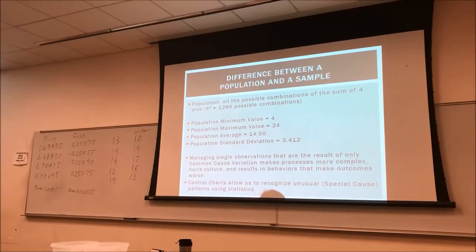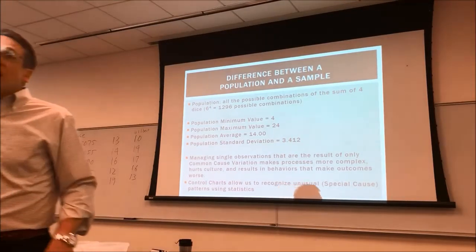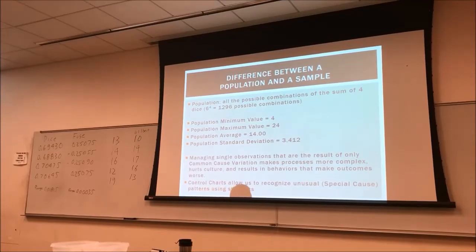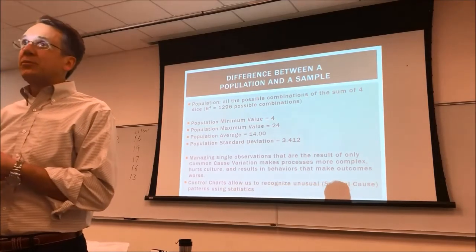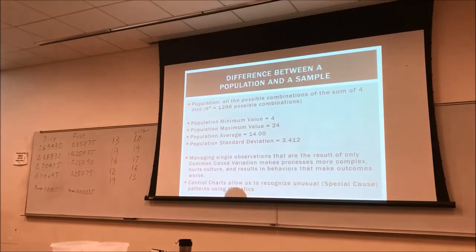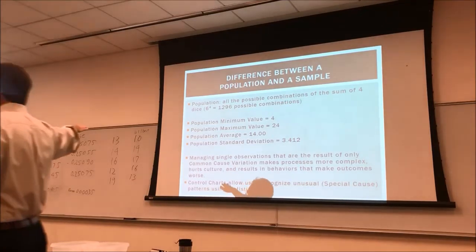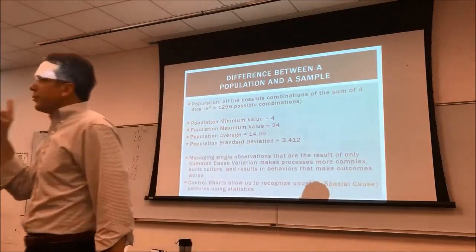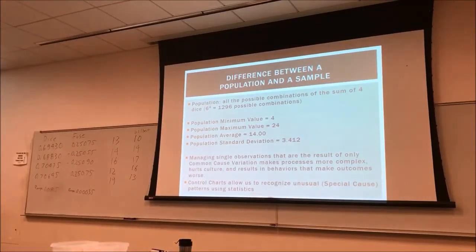As a manager, when I try to micromanage every little observation — even though it's all common cause variation — I'm giving instructions like 'hold the box this way, try harder.' What I'm doing is adding complexity and confusion to the process. And whenever you make a process more complex and harder to understand, does quality and productivity go up or down? It goes down. My actions had no impact on making the process better, but I thought they did because I acted and got a result immediately after.